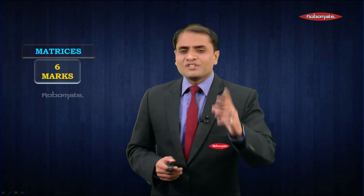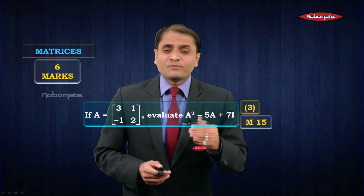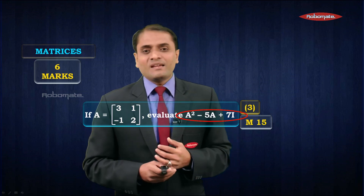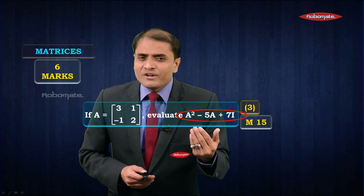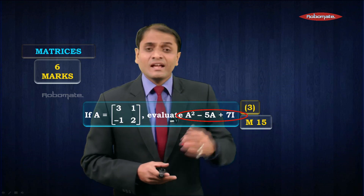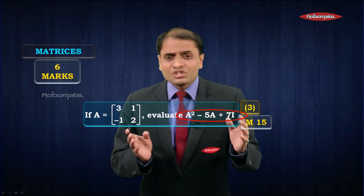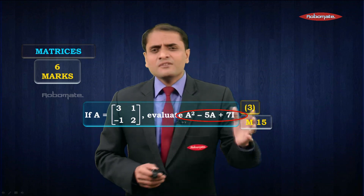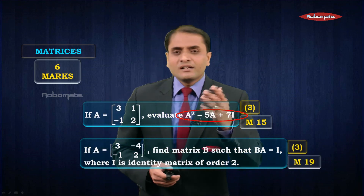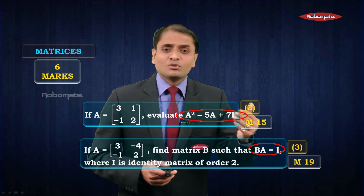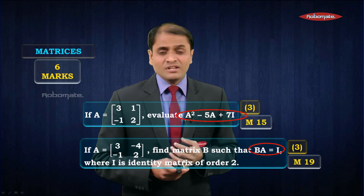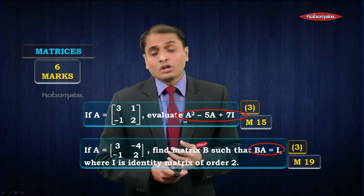The next chapter is matrices — two questions of three marks each. In the first type you have to evaluate A squared minus 5A plus 7I, where I is the identity matrix. You must use the concept of multiplication of matrices, as well as addition and subtraction of matrices. In another typical question, you are told to find the matrix B such that BA equals I, where I is the identity matrix — also based on the concept of multiplication of matrices.